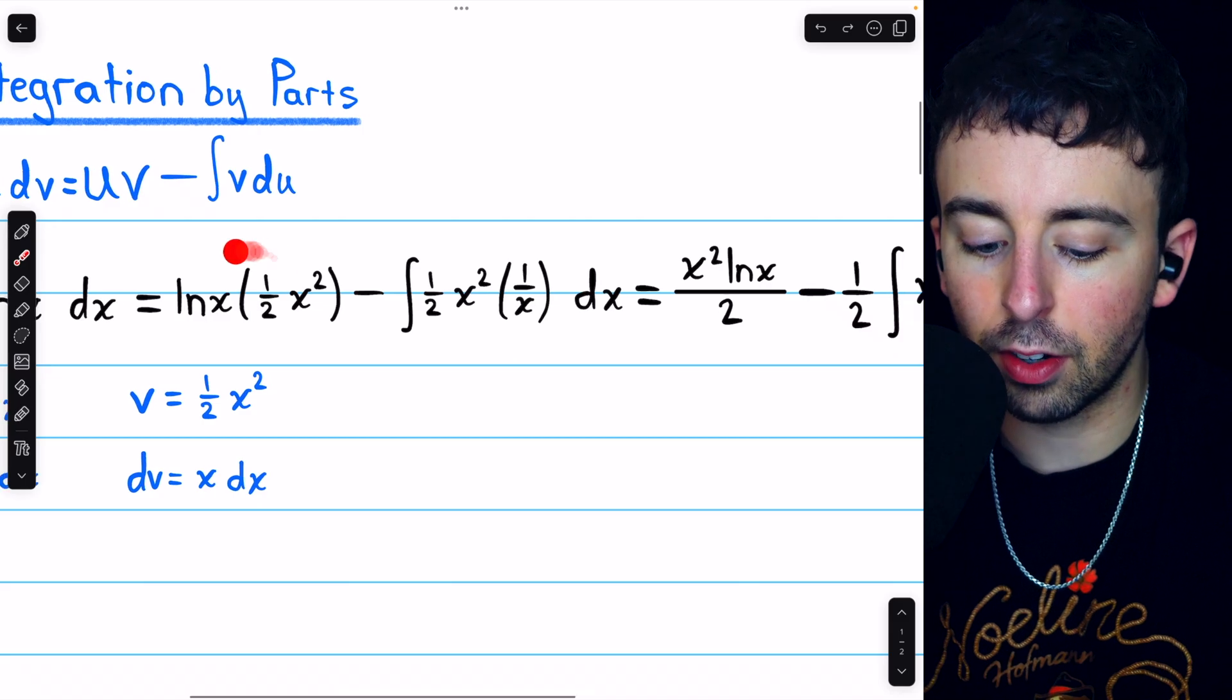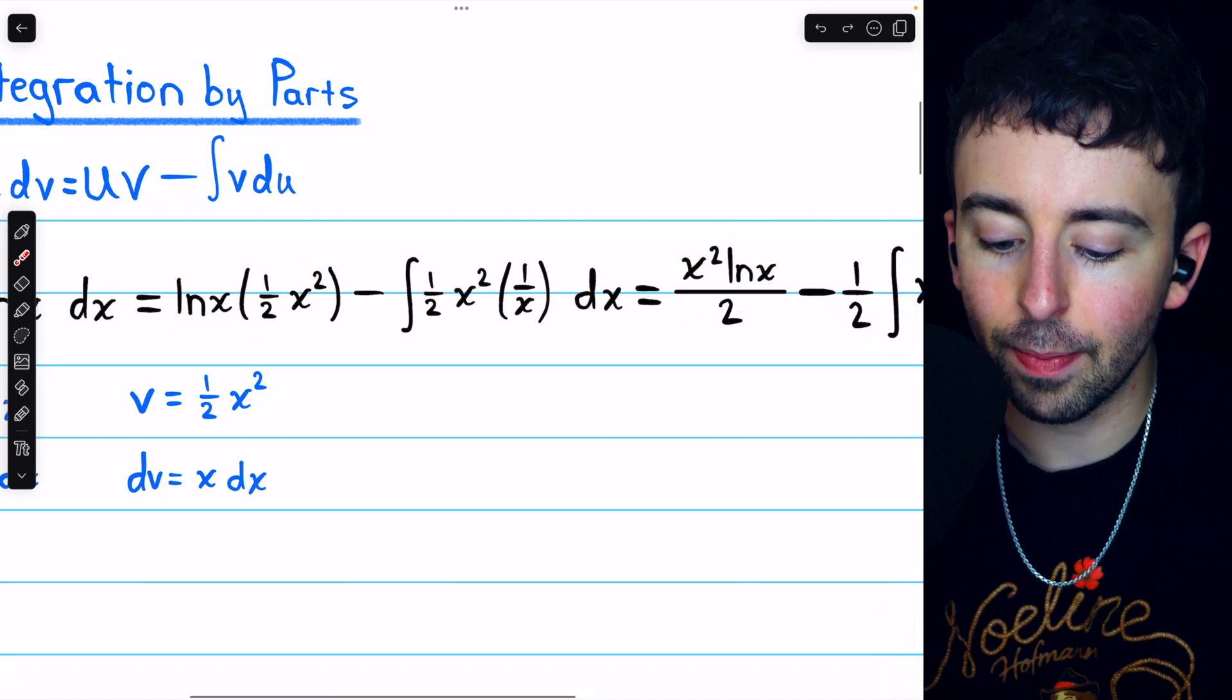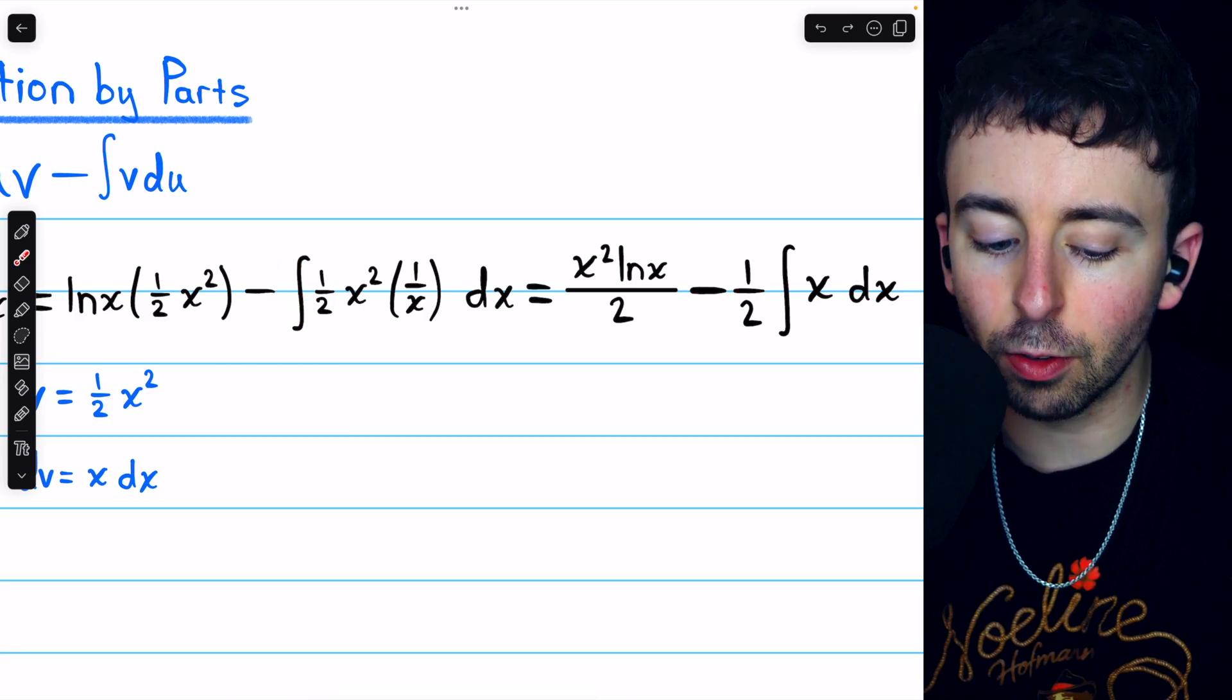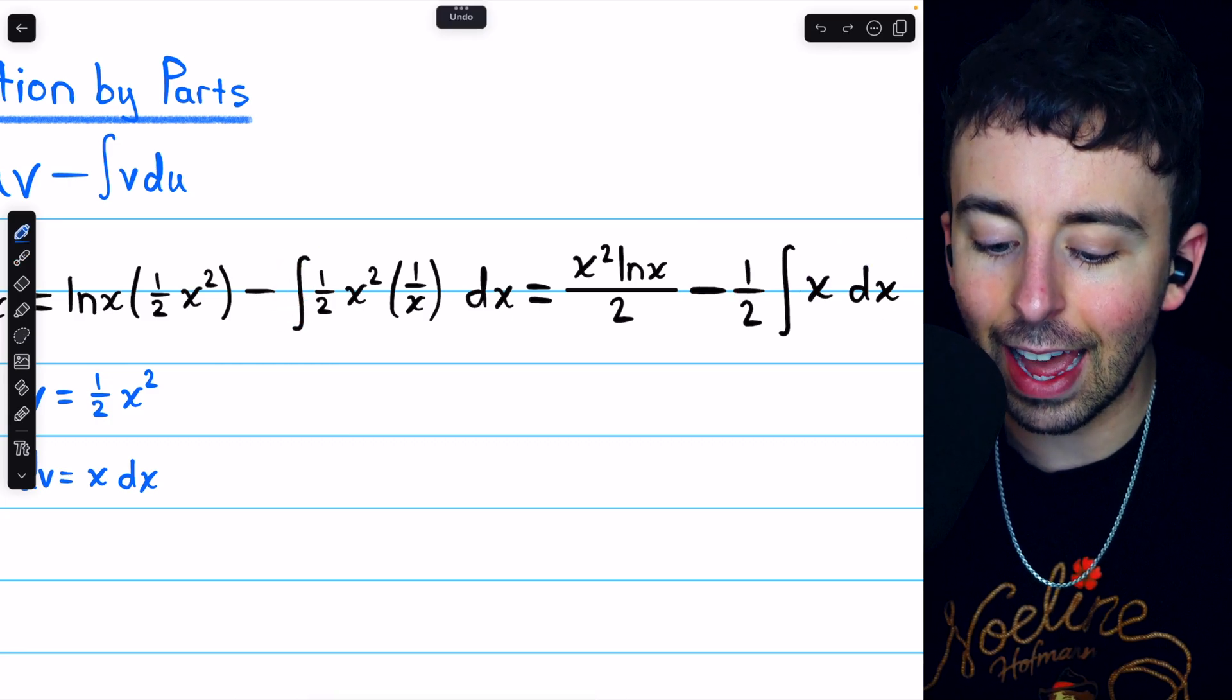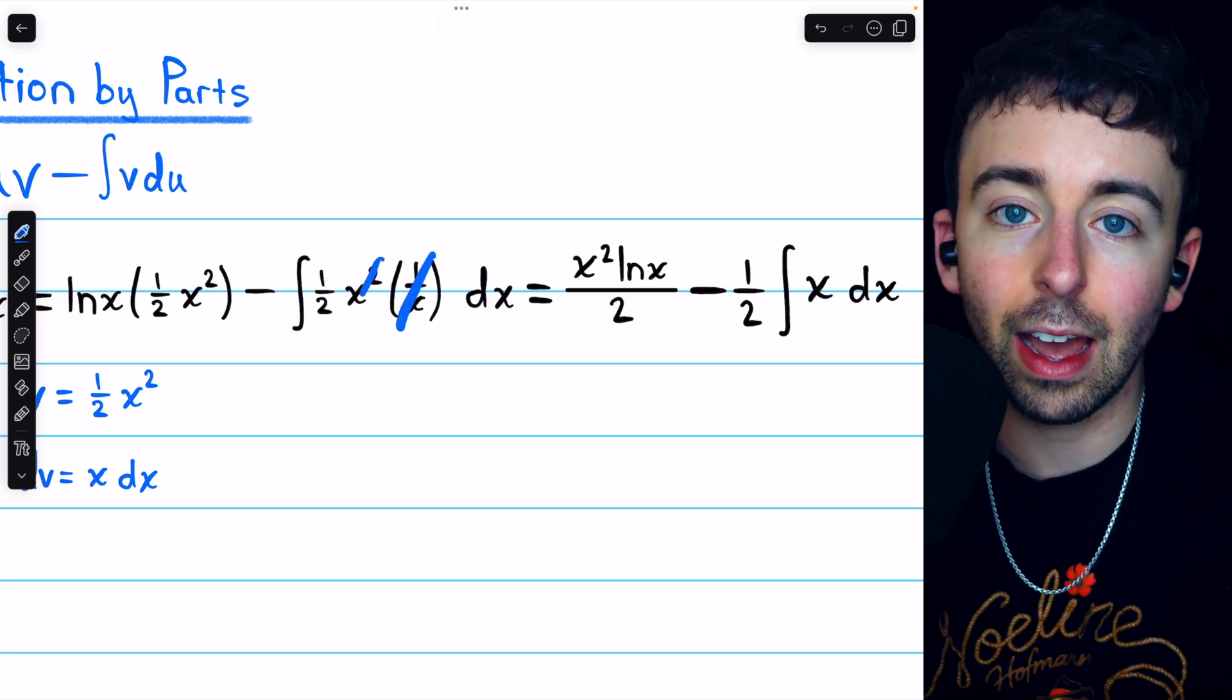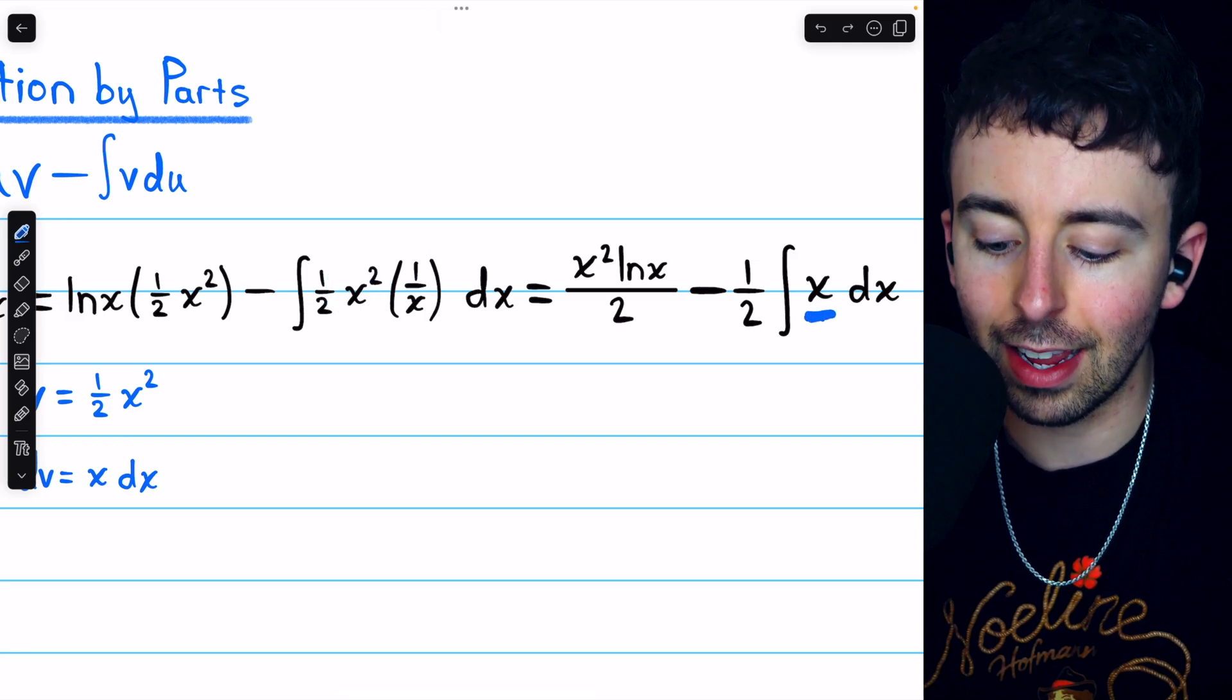So, that's going to leave us with this term, which we can rewrite like that, minus, we took the 1 half out, so minus 1 half, times the integral of just a single x. This was x squared, but we canceled out one of those with that 1 over x. So, now it's just a single x.